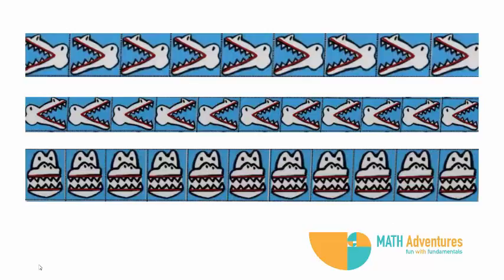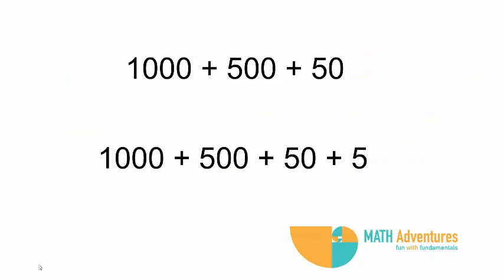Let us consider two numbers in their expanded form. So we have 1000 plus 500 plus 50 and the second number as 1000 plus 500 plus 50 plus 5.